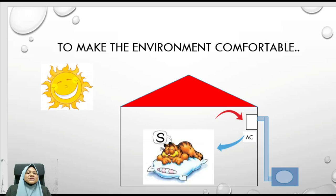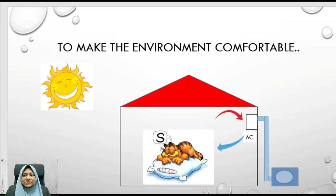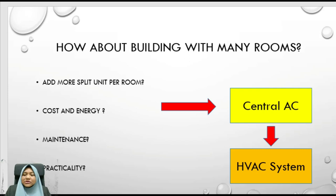Now imagine another situation where your house has an installed air conditioner. The environment will be more comfortable because it is cooler than the surrounding air — you can set the air conditioner temperature. But for a building with many rooms, do you add more split units per room, increasing cost, energy, and maintenance? Is it practical, or do you want to use a central air conditioning system?